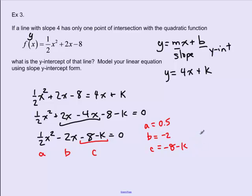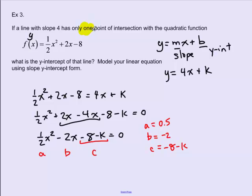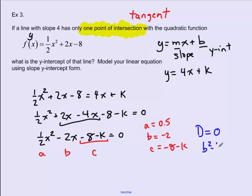We're given one key clue: the line has only one point of intersection with the quadratic, meaning it is tangent to the quadratic. One point of intersection means the discriminant must equal 0. In other words, b squared minus 4ac equals 0. We can use this condition to solve for k by substituting our values for a, b, and c.